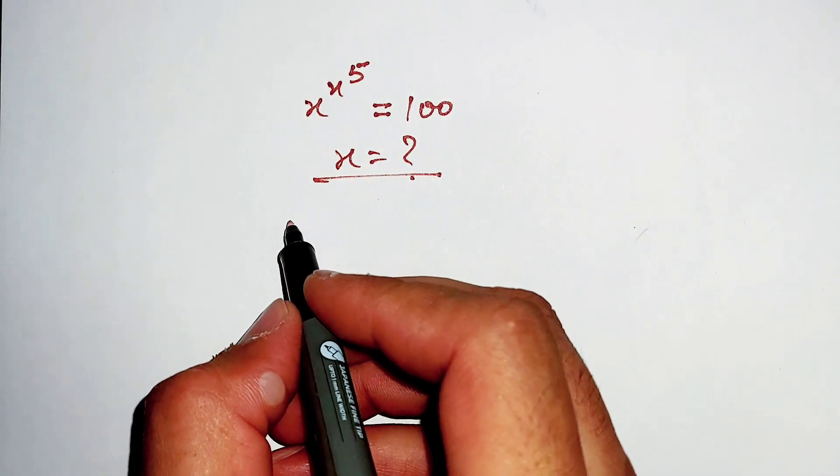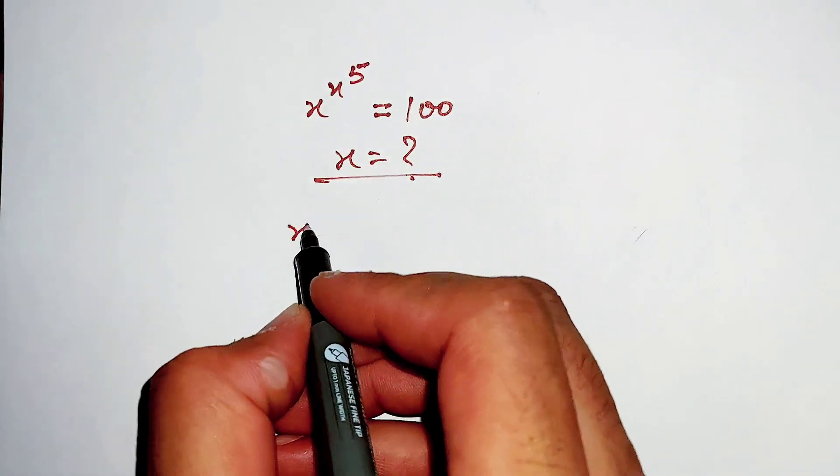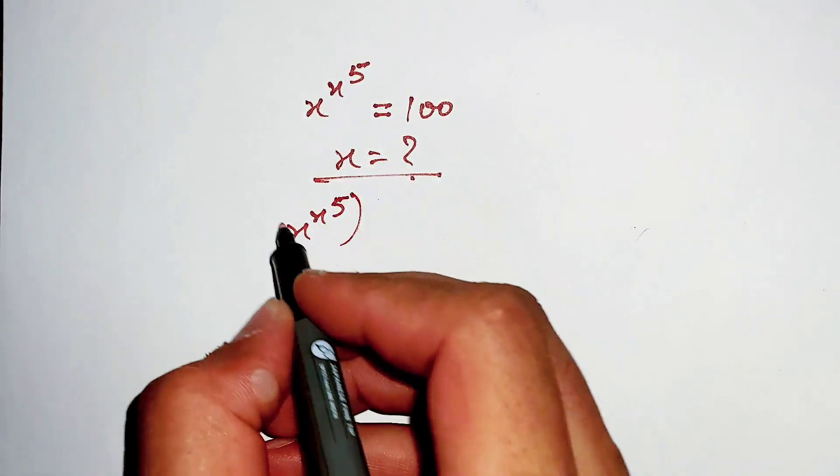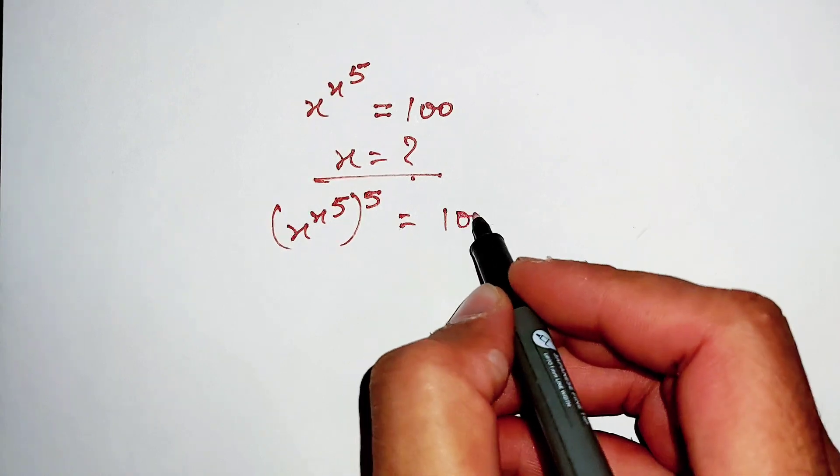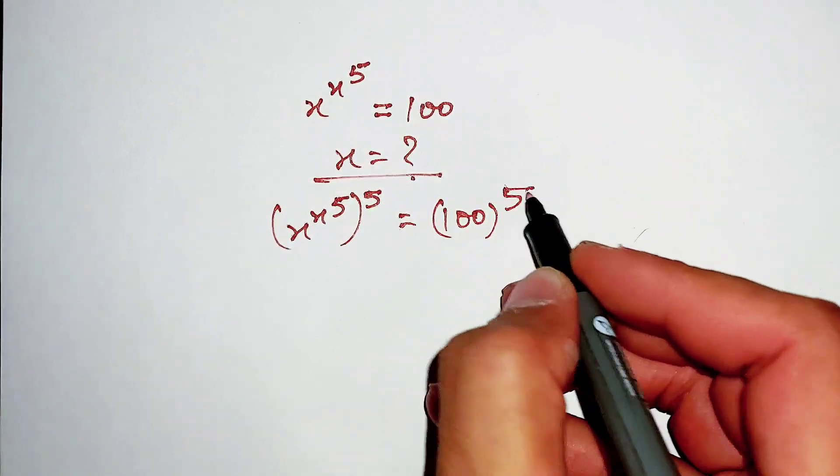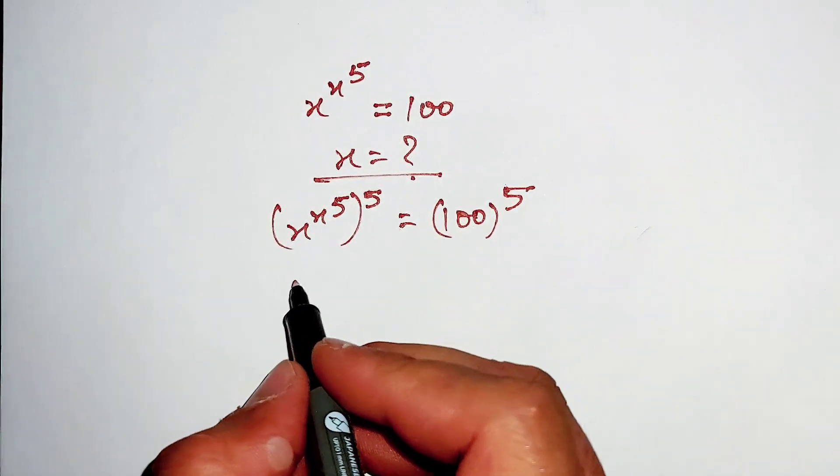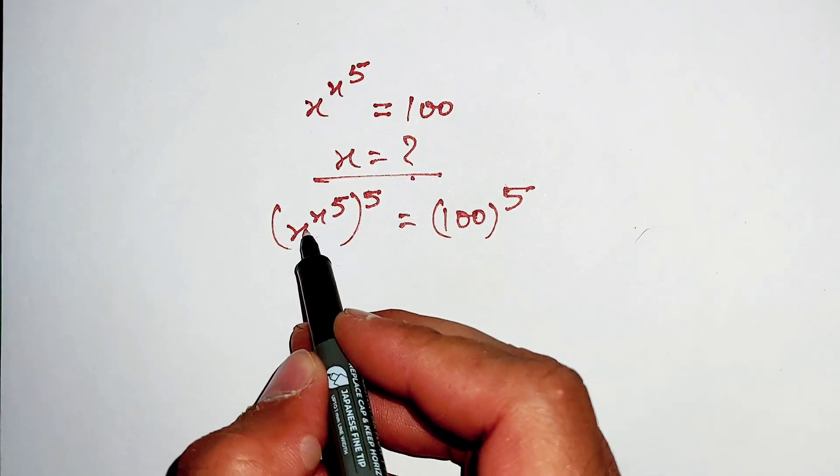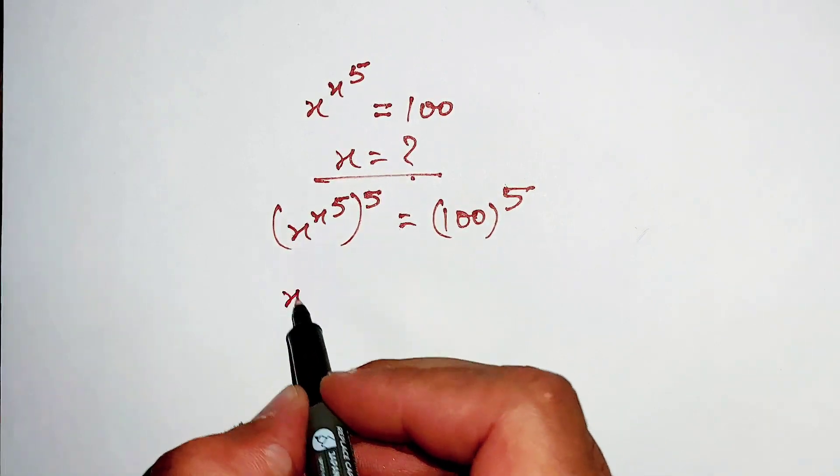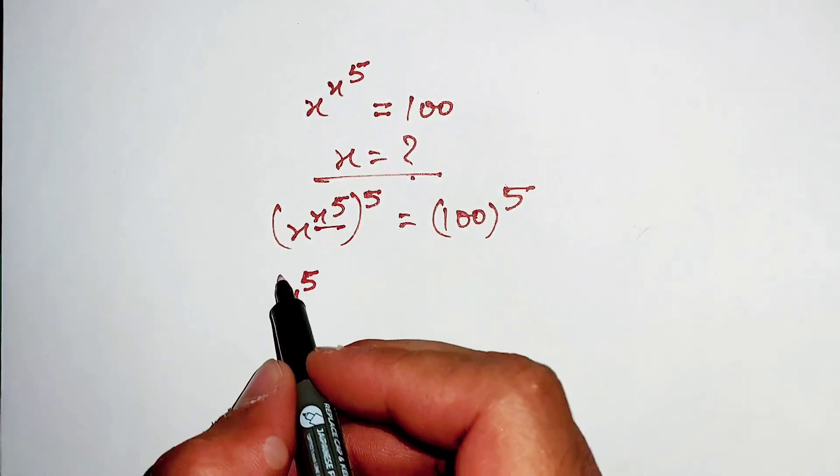First of all, we will take power 5 on both sides. Now what we will do is raise both sides to the power of x^5.